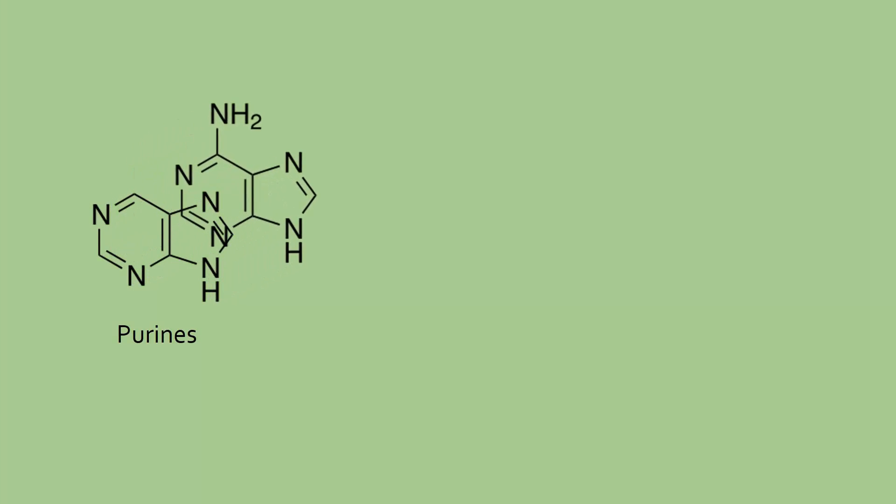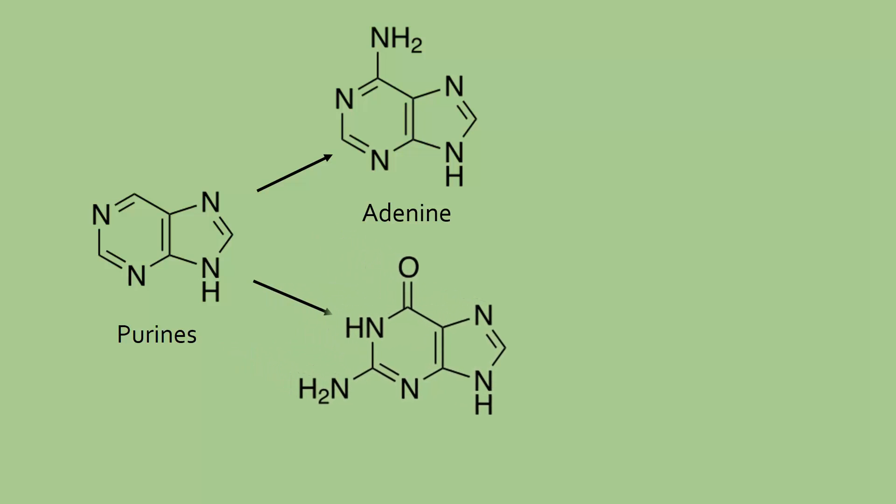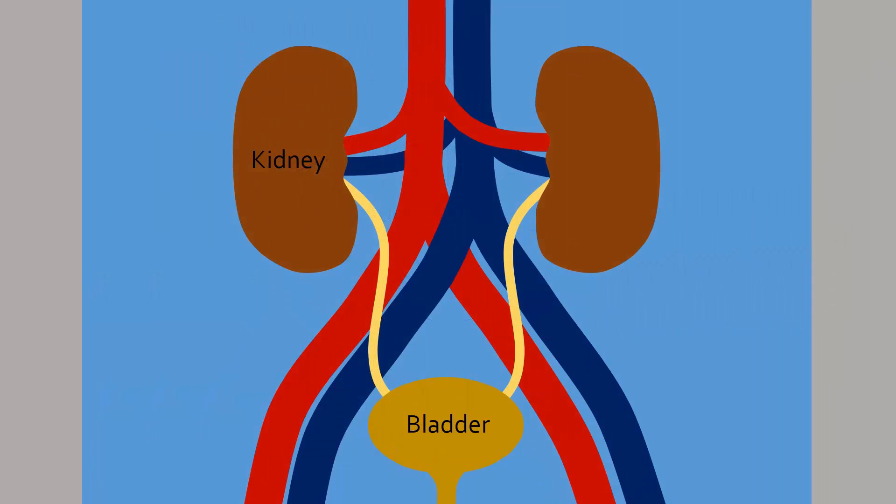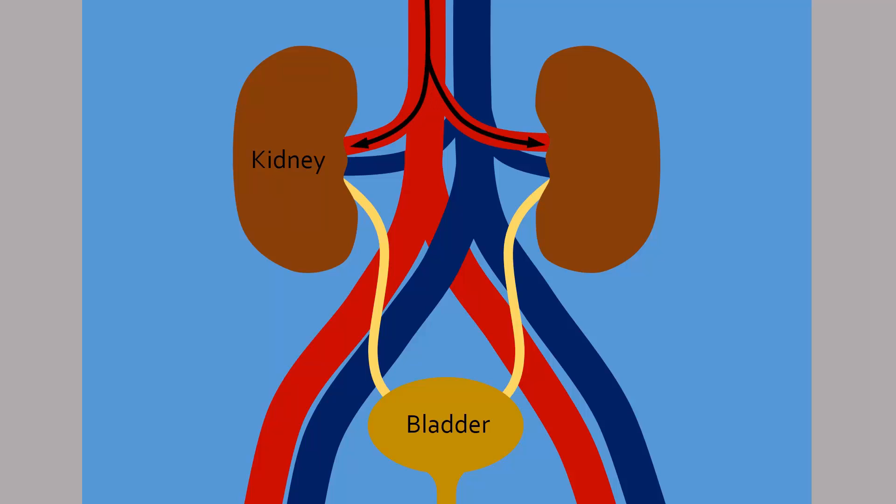Compounds known as purines, for example adenine and guanine, are found in genetic material in both our own cells and in food. Purines are eventually broken down into uric acid. Normally, most uric acid is filtered out of our bloodstream in the kidneys and excreted in the urine.